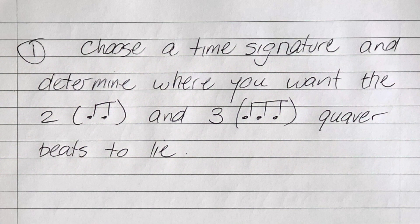So to recap the process: number one, choose a time signature with uneven beats. And then determine exactly where you want your two-quaver beats and three-quaver beats to lie. Remember, it does not matter how experimental you are with your time signature selection. Each beat will consist of either two or three smaller components, quavers in this case.